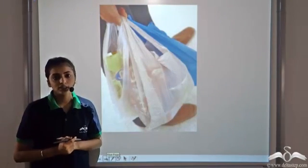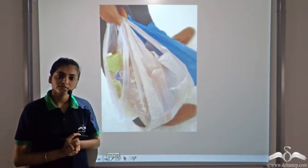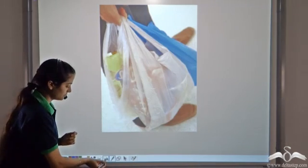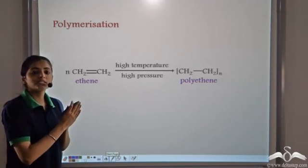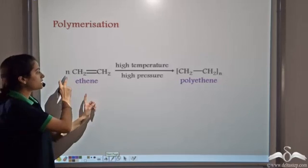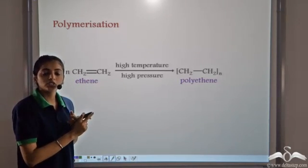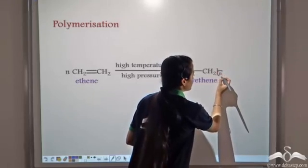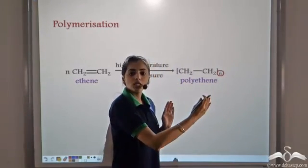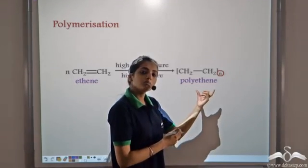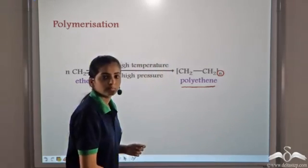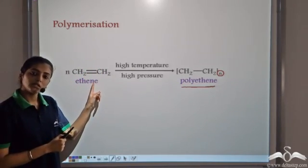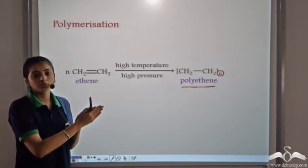We have all used polythene — the name itself gives a hint: it is a polymer of ethene. We get polythene from the polymerization of ethene. Taking N molecules of ethene at a very high temperature and very high pressure, it forms the polymer: –(CH₂–CH₂)ₙ–, where N shows that it forms long chains of ethene, which we call a polymer. So the polymer of ethene is polythene — the polythene we use every day — obtained by the polymerization of ethene at high temperature and high pressure.